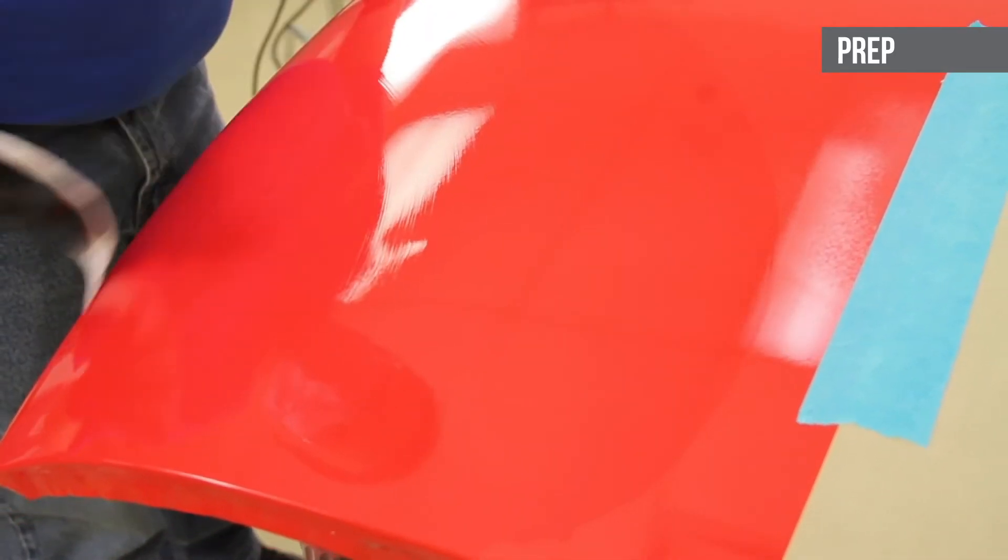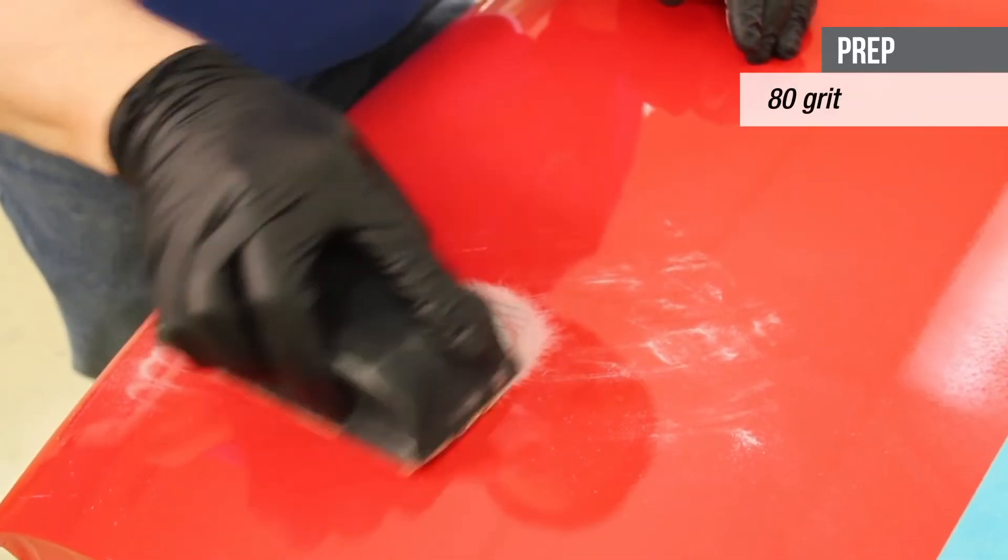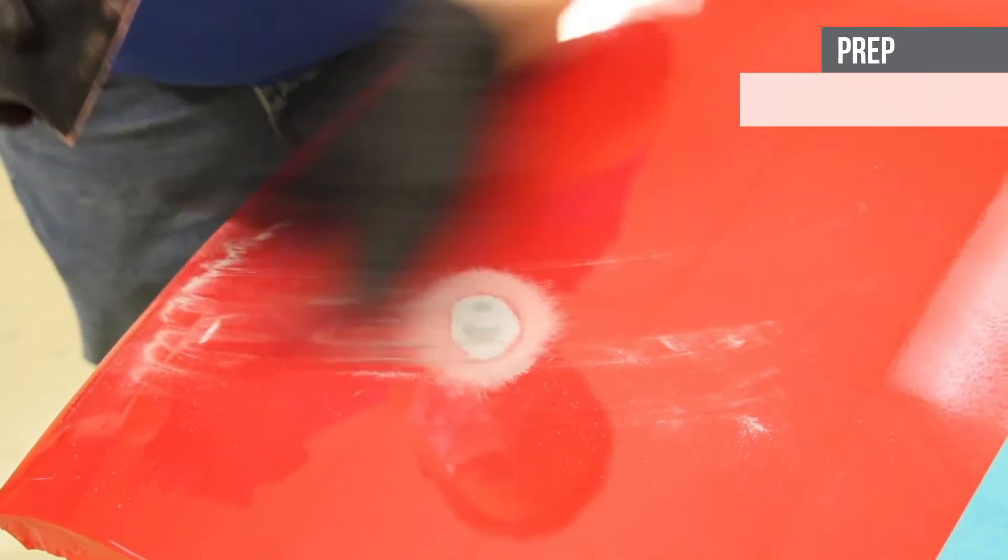Let's start with the prep step. Clean the repair area with soap and water. Use 80 grit sandpaper or a sanding disc to remove the paint.